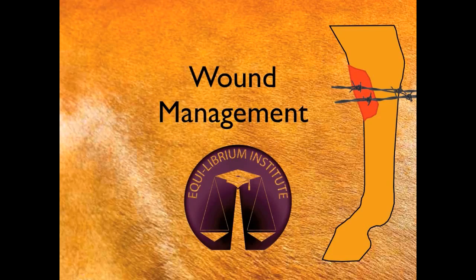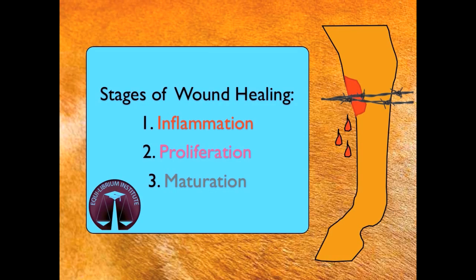For a wound to heal properly, it must complete three stages of healing: inflammation, proliferation, and maturation.